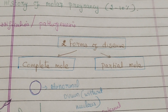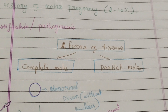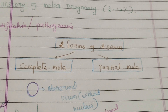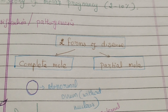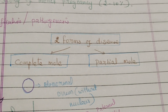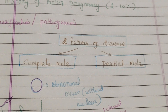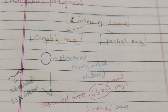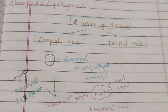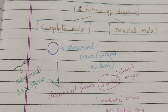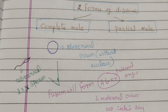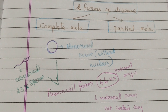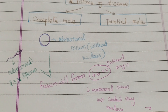Coming to classification and pathogenesis, there are two forms of the disease: complete mole and partial mole. The abnormality lies in abnormal fertilization, which leads to abnormal placental growth and the development of molar pregnancy.